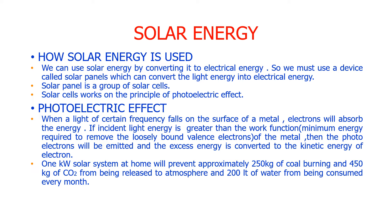For example, one kilowatt solar system at home will prevent 250 kg of coal burning, 450 kilograms of carbon dioxide greenhouse gas emissions, and 200 liters of water consumption. So we can save the earth as well as the atmosphere.